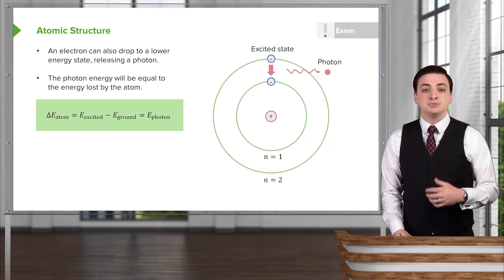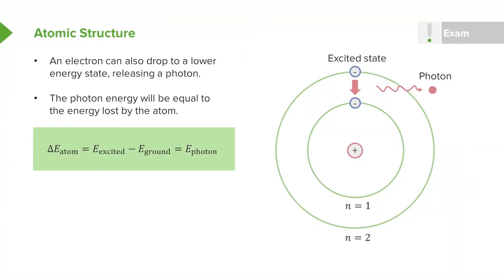We can calculate this energy just by using conservation of energy. So if the atom had one amount of energy and then changed to a lower amount of energy, we can calculate the difference. We can calculate how much energy was lost. So we write that in the same terminology that we've been using, using a delta sign to represent change. So the change in the energy of the atom is the final energy that it had, or rather the excited energy, the initial energy, the first energy,